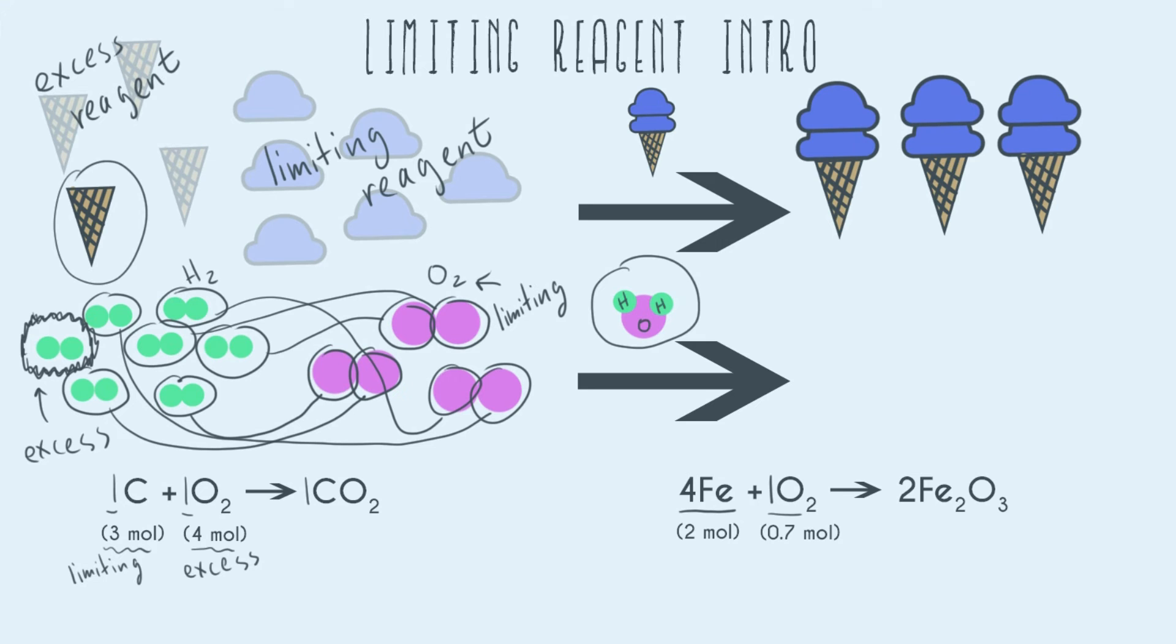I like to do a way where we kind of see how much each reagent would need, and then we see which one of those situations is actually possible. So what does that mean? So we have two moles of iron. So we know that we have this ratio. For every four atoms of iron that we have, we need one O2 molecule.